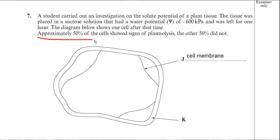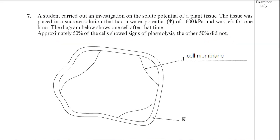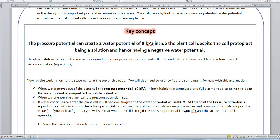Looking at this important statement again: approximately 50% of the cells show signs of plasmolysis, the other 50% did not. That's the key to it, because there's a little rule you need to remember in osmosis in plants. When you have 50% plasmolysis cells and the other 50% are not plasmolysed — i.e. turgid — that is the point of incipient plasmolysis. And when you have incipient plasmolysis, the pressure potential inside that cell is zero.